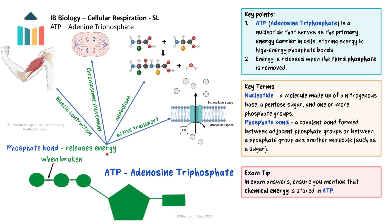ATP stores and distributes energy for cellular processes like muscle contraction, movement of cell components such as chromosomes, synthesis of macromolecules (in other words anabolism) and active transport. What makes ATP ideal for this role is that the bond between the second and third phosphate group is easily broken, releasing a small, manageable amount of energy. This makes ATP highly efficient, as energy can be released quickly and in controlled amounts where and when it's needed.